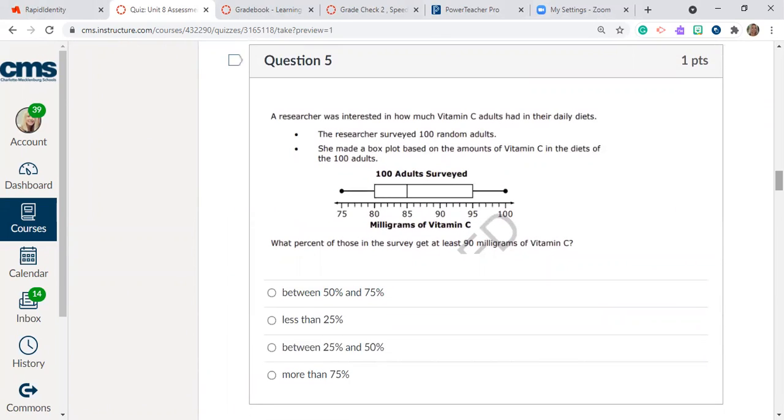Question number five. A researcher was interested in how much vitamin C adults had in their daily diets. The researcher surveyed a hundred random adults. She made a box plot based on the amounts of vitamin C in the diets of the hundred adults. So here's our box plot. There was a hundred adults surveyed. And it represents the milligrams of vitamin C. All right. So take a look at your data. Then here's the lower end, the upper end. What percent of those in the survey get at least 90 milligrams of vitamin C?